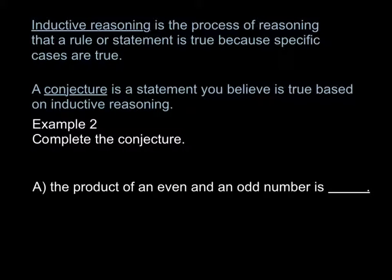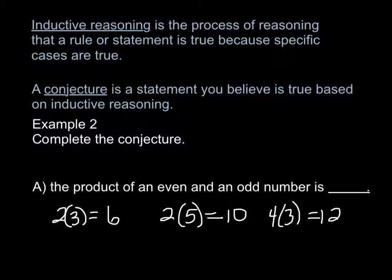So here's example two. Complete the conjecture. The product of an even number and an odd number is blank. Now the conjecture is that statement. So the first thing you have to do is use inductive reasoning to find a pattern or example. Always make your own examples. So in this problem, it says the product of an even and an odd number. So multiply an even and an odd number together. Here we get 6. 2 times 5, even and odd, that gives me 10. Even and odd, that gives me 12. 4 times 5, that gives me 20. So the product of an even and an odd number is what? Your conjecture then would be that it's even. Because each of these examples that you picked using inductive reasoning, that's the process. Your conjecture would prove that the product of an even and an odd number is even.